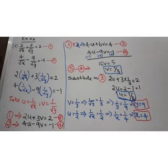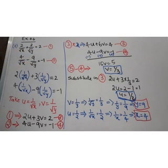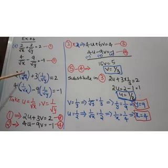Next question. The question is: 2 by root x plus 3 by root y is equal to 2, and 4 by root x minus 9 by root y is equal to minus 1. Rewrite that in this form with coefficients and variable terms separated.